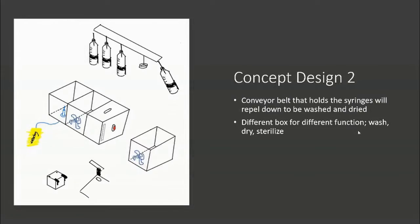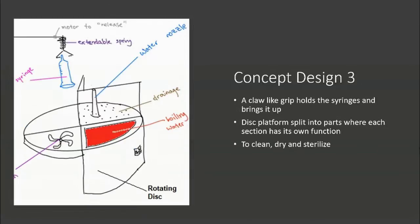In the second design, there will be like a conveyor belt that holds the syringes and then it will propel them down to be washed and dried. As you can see in the box, there are different boxes with four different functions which is the wash, dry, and sterilize.